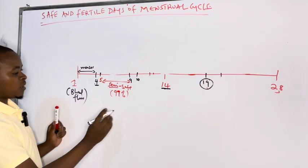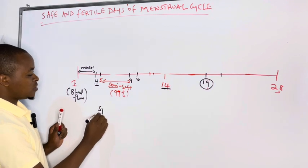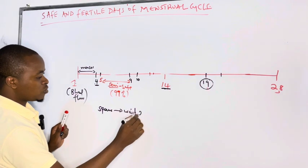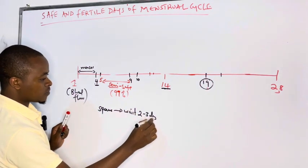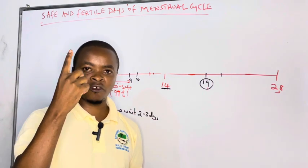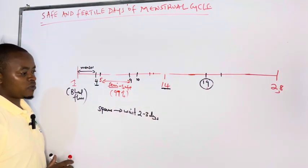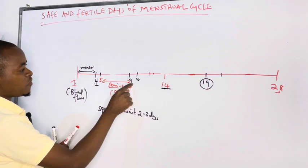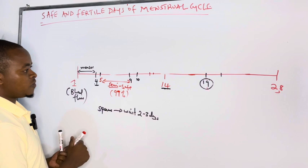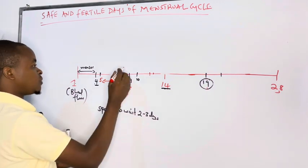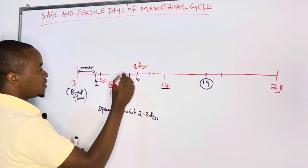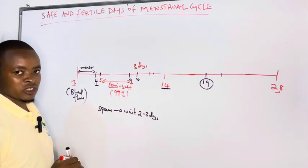Because whenever the sperm reach in your fallopian tube, the sperm wait patiently for 2 to 3 days. The one responsible for boys waits for only 1 day, then for girls waits for even 3 days. That's why we are saying you should stop at day 9, not up to day 12. Because if the sperm are released at day 9, they are going to wait for more 3 days. It is safe to stop at day 9 of your menstrual cycle.